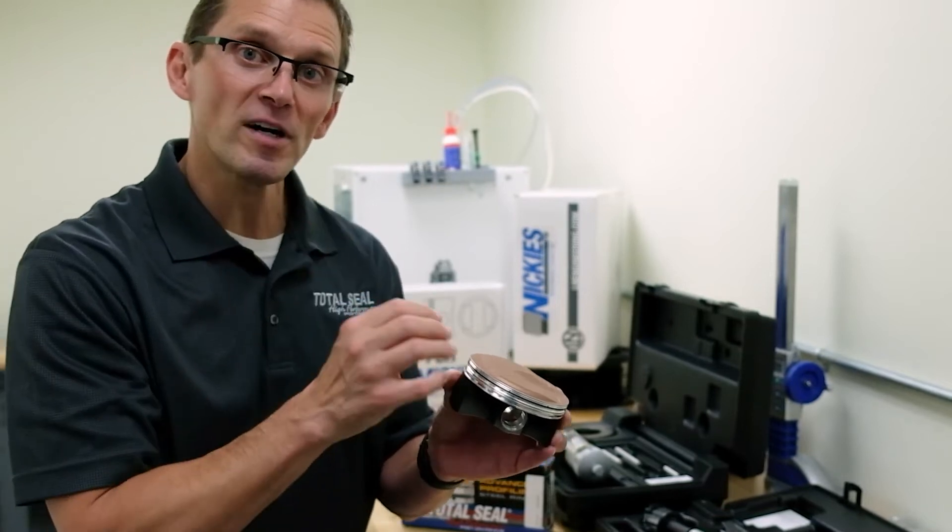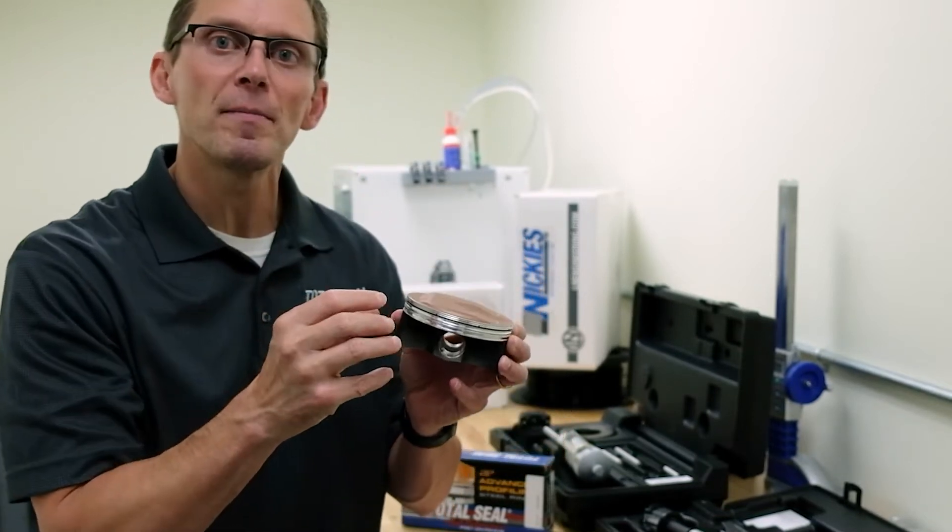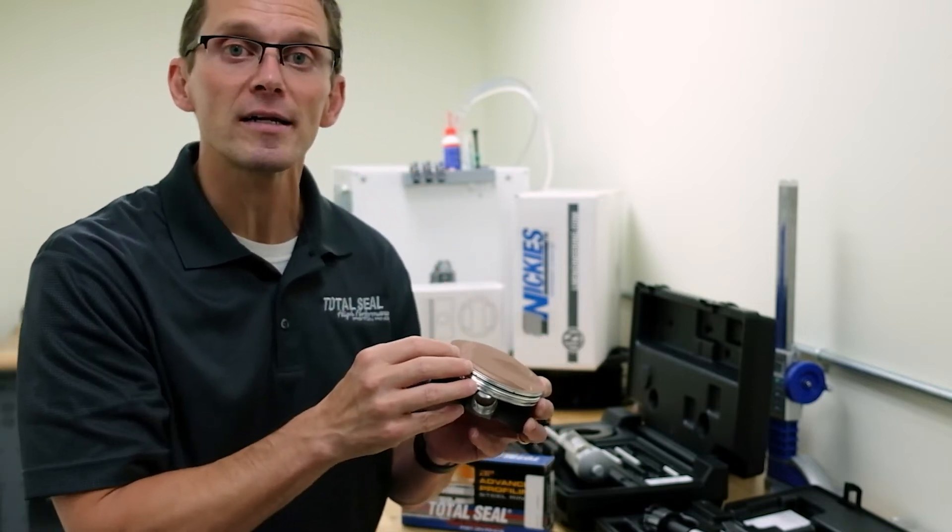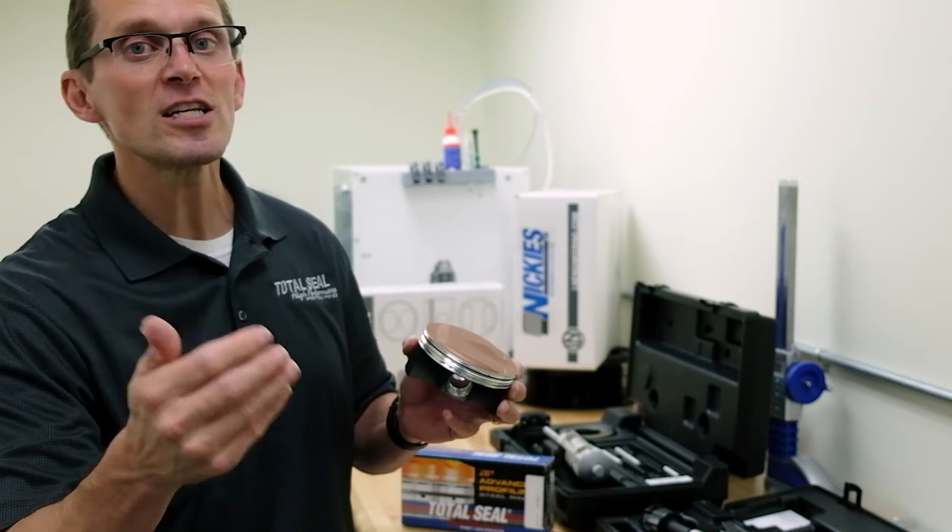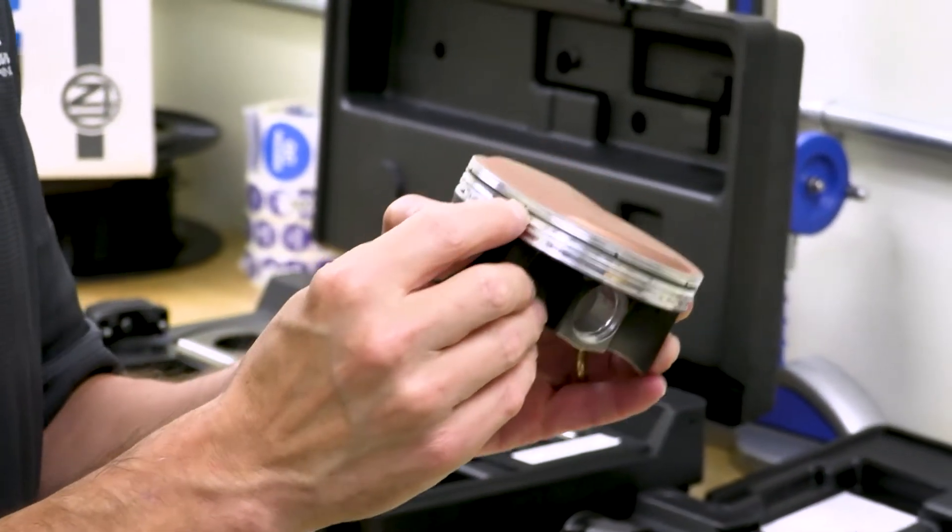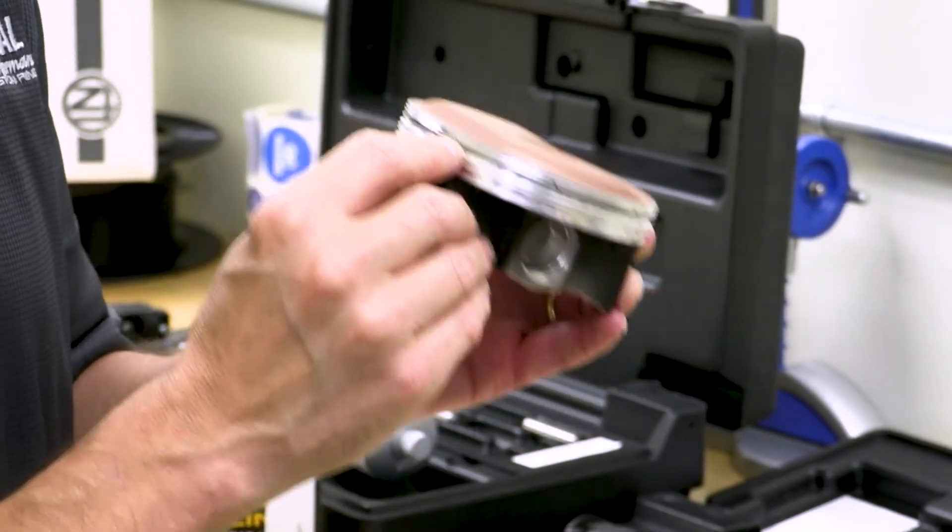As the gas port gets dirty and clogged up, that port gets smaller, so you have less gas pressure getting behind the ring. You're losing some of that effectiveness of creating a better seal because the gas ports are getting clogged.